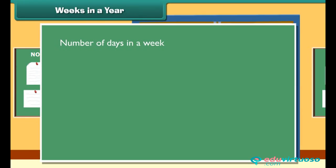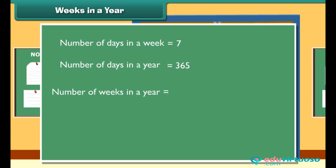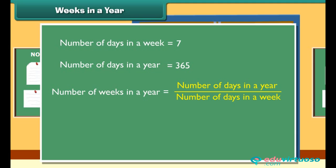Weeks in a year. There are 7 days in a week and 365 days in a year. The number of weeks in a year equals 365 divided by 7, which equals 52 weeks.